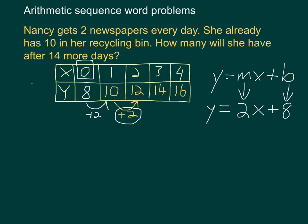In order to find out how many she'll have after 14 more days, we just plug in 14 for x. And we get y equals 2 times 14 plus 8.